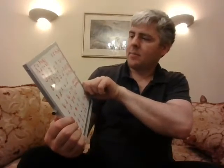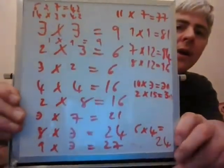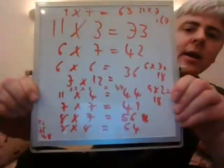One times nine equals nine, three times three equals nine. Six sevens are 42, as indeed 14 times three equals 42. Thank you for looking at that.